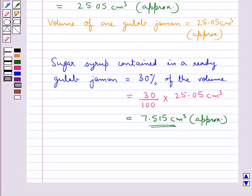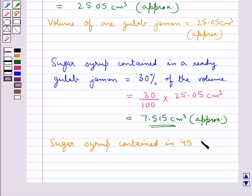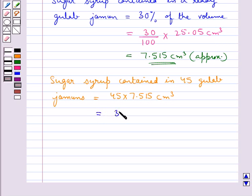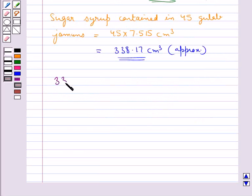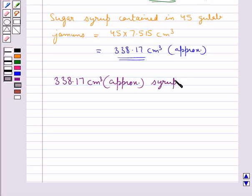We need to find the sugar syrup contained in 45 gulab jamuns. So the sugar syrup in 45 gulab jamuns is equal to 45 × 7.515 cm³, which would be equal to approximately 338.17 cm³. Thus our final answer is 338.17 cm³ approximately of syrup would be found in 45 such gulab jamuns.